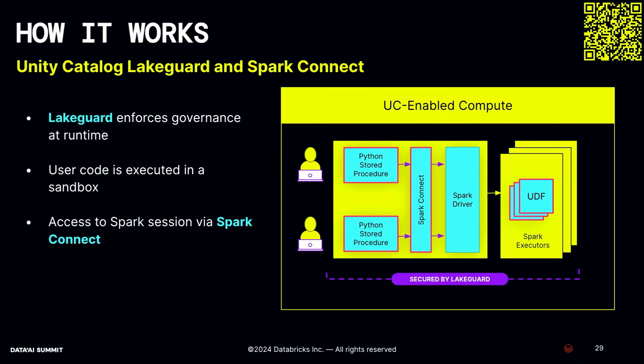There are two key elements behind Python procedures. First, procedures are secured by Unity Catalog LakeGuard, which allows you to run user-defined code in a sandbox environment, providing full isolation and enhanced security. Second, the Spark session in the procedure is powered by Spark Connect, which decouples the client application from the server, making the client very lightweight and enabling more flexible and efficient execution of the procedure.